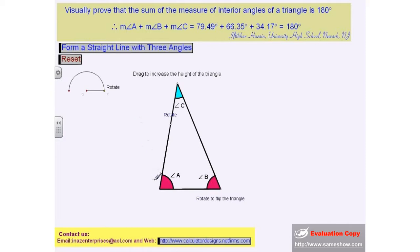The angle A and angle B will be placed adjacent to angle C. By doing so, the three angles will form a straight line.